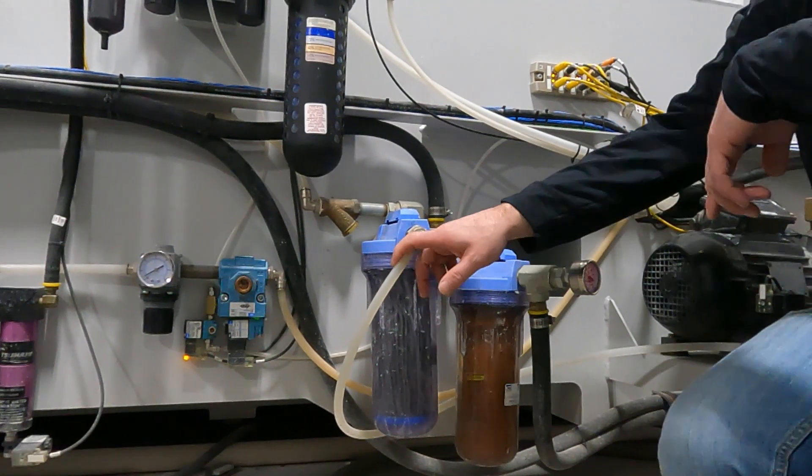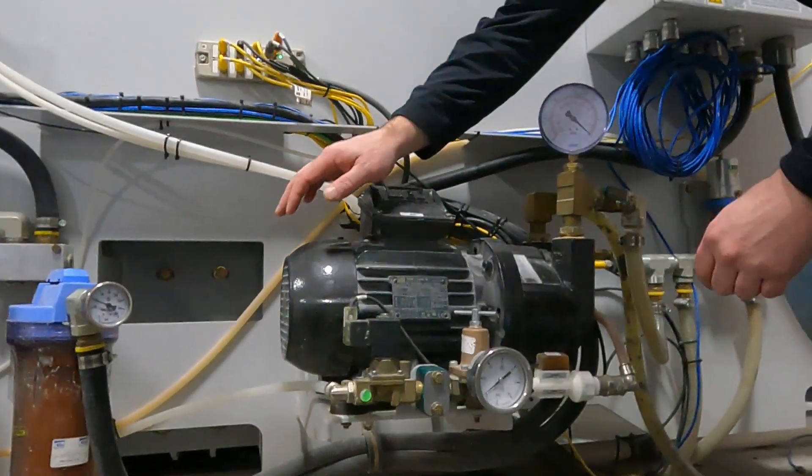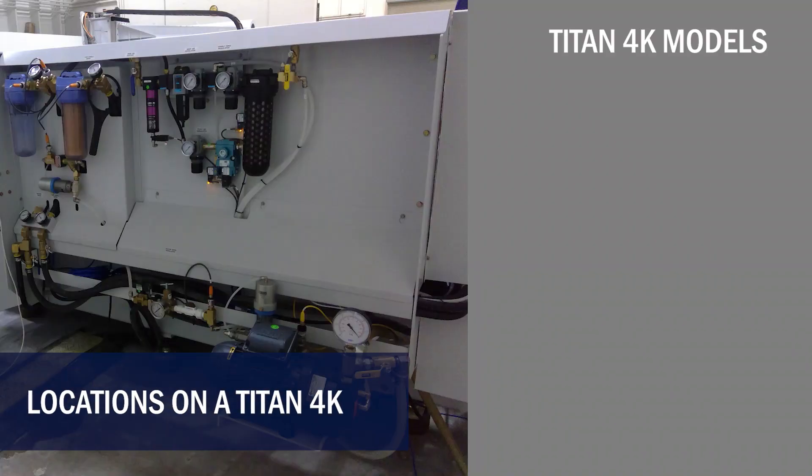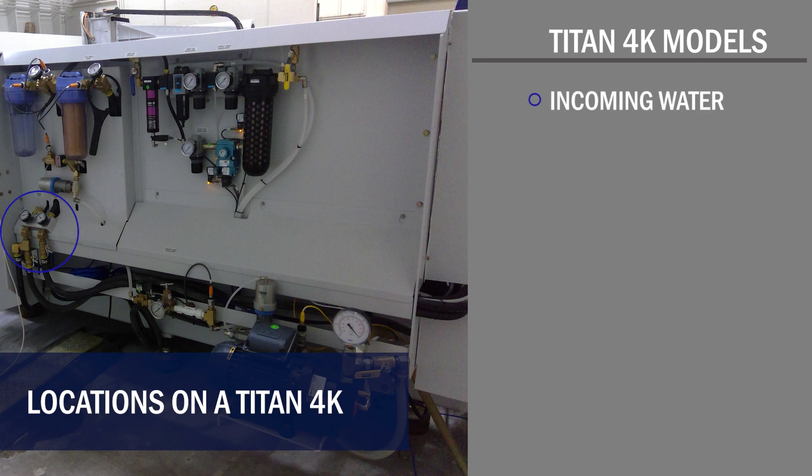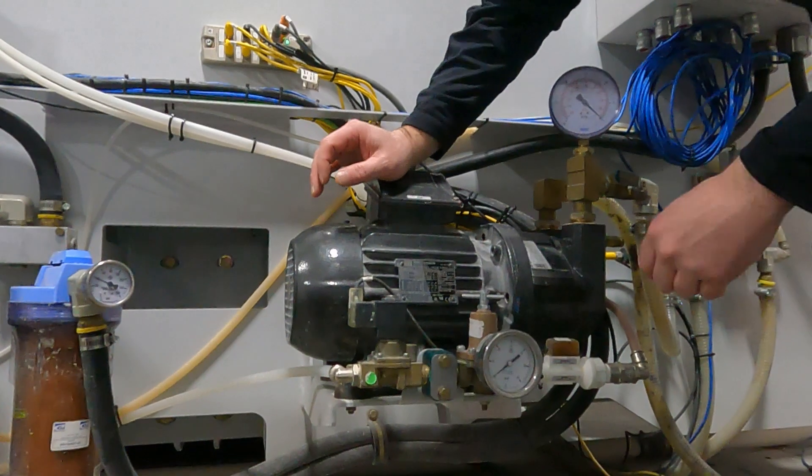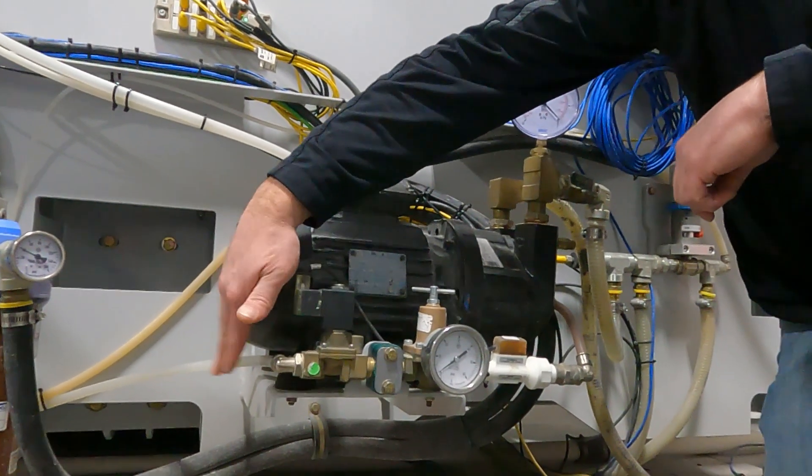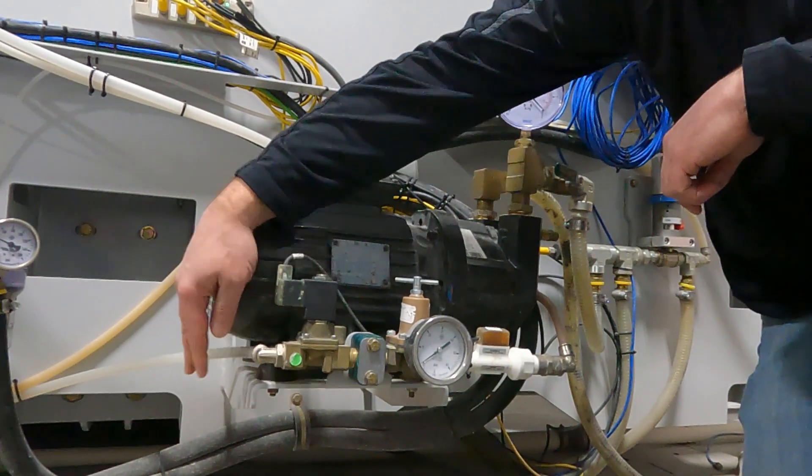Now it comes out your filter and comes back here towards the vacuum pump. This side on this 3000 series Titan, this side is your inlet water here.